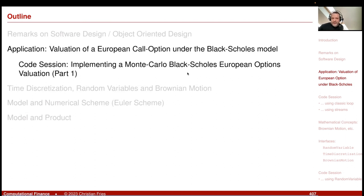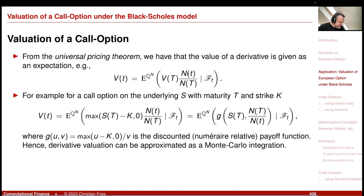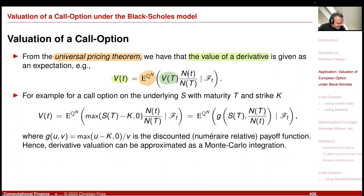Valuation of the European call option under the Black-Scholes model. Let's have a small recap. From the universal pricing theorem, I can express today's value of a financial derivative as an expectation under the equivalent martingale measure of the future value of the financial derivative — N of capital T multiplied with the numeraire at evaluation time, taking the conditional expectation at little t.